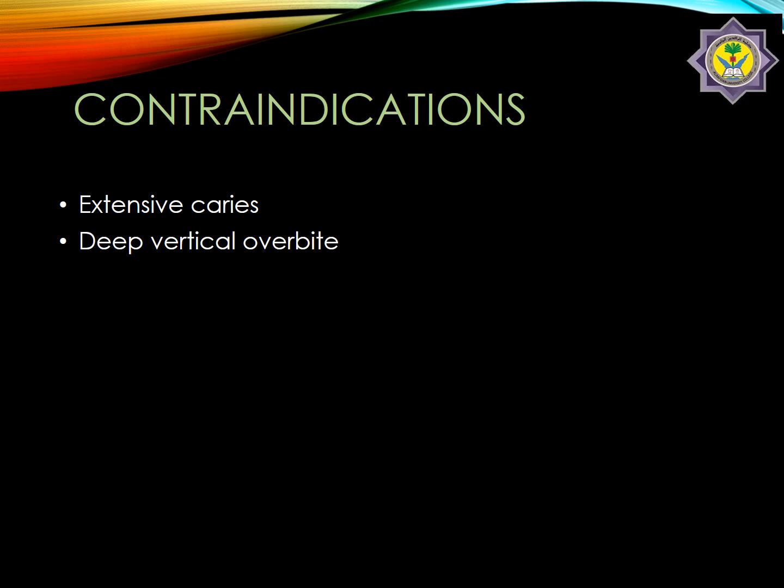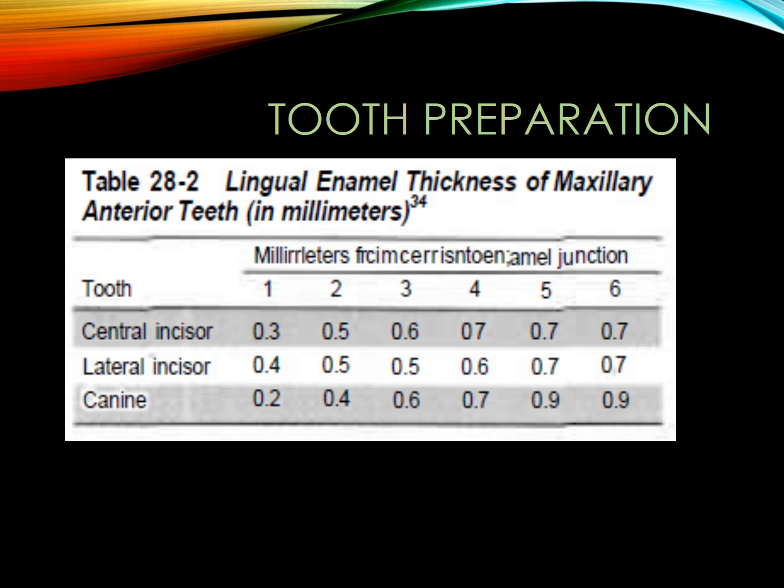In deep vertical overbite, the retention would be drastically reduced because of poor bonding strength afforded by the exposed dentine. Tooth preparation will involve the axial part, axial reduction, and guide planes on the proximal surface.